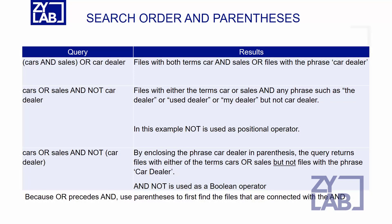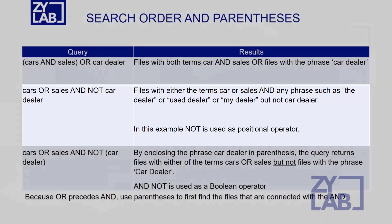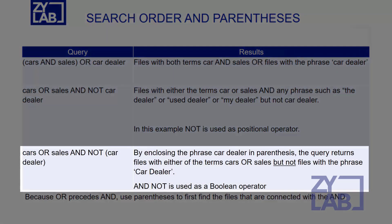In addition to determining the order in which a search is performed, parentheses also determine how terms or phrases are queried when using NOT. In the example CAR or SALES and NOT CAR DEALER, the query will return files with either CARS or SALES and any two-word phrase where the second word is DEALER — such as USE DEALER or MY DEALER — but NOT CAR DEALER. Whereas placing the phrase CAR DEALER within parentheses, the query returns files with the terms CARS or SALES but not files with the exact phrase CAR DEALER.